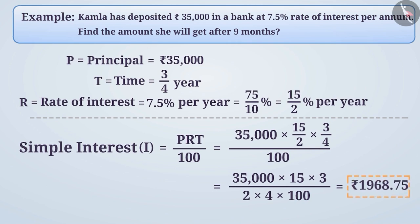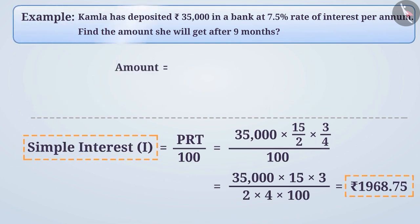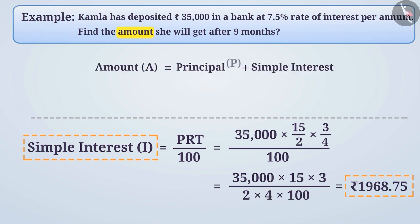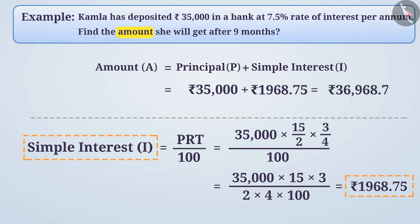The simple interest is Rs 1,968.75. But in the given question, we are asked to find the amount. The amount is equal to principal plus interest, so A = P + I = Rs 35,000 + Rs 1,968.75 = Rs 36,968.75. Thus, after 9 months, Kamala will get Rs 36,968.75 as the amount.